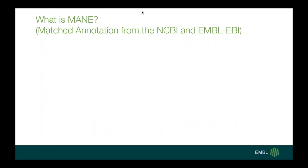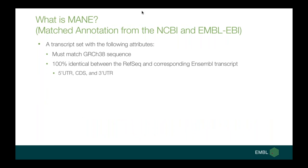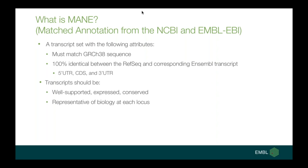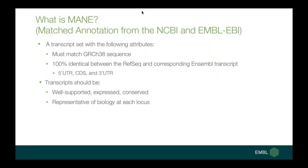MANE stands for Matched Annotation from the NCBI and EMBL-EBI. The goal is to create a transcript set that must match GRCh38 and must be a pairing of a RefSeq NM and its corresponding ENST that are 100% identical at the 5' UTR, CDS, and 3' UTR levels — truly synonymous transcripts. Each MANE transcript must be well-supported, well-expressed, well-conserved, and representative of biology at that locus. The project has two phases: MANE Select, which identifies one transcript per protein-coding locus as the default across resources and browsers, and MANE Plus, which will identify additional well-supported transcripts of particular interest for clinical reporting.